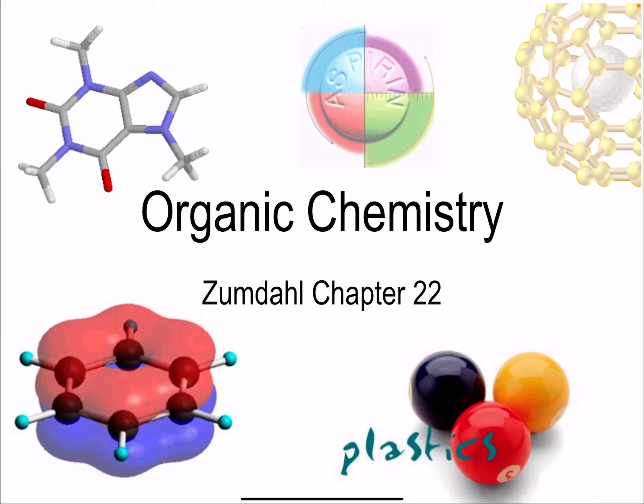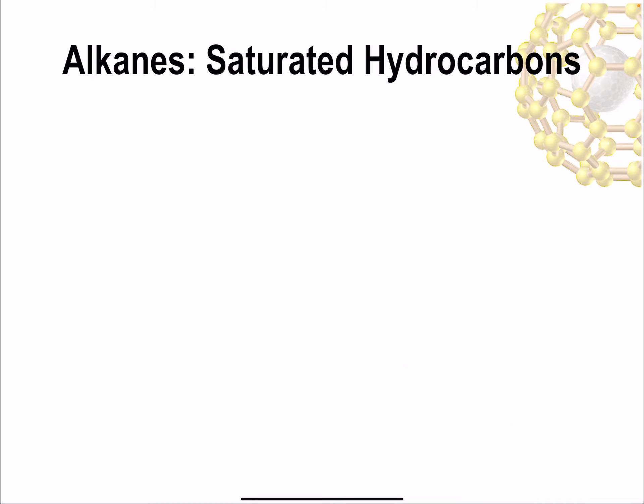We're beginning our final unit of grade 11 advanced chemistry: organic chemistry. This is not a topic for the AP chemistry exam, but it's a topic that we need to cover for our provincial curriculum. The focus here is going to be on nomenclature primarily — learning how to name organic molecules and learning how to draw molecules when we're given the names. We'll also look at a few organic reactions, and we'll use the unit as a way to review some old material.